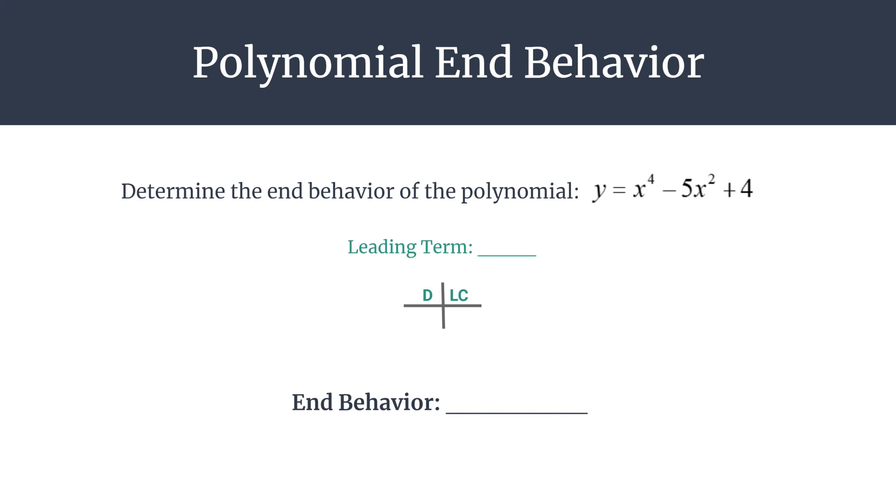Alright, so first let's identify the leading term. And the leading term is simply the polynomial term that has the highest exponent. So in this case, our leading term is x to the fourth.